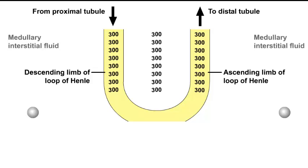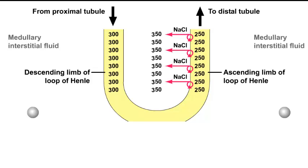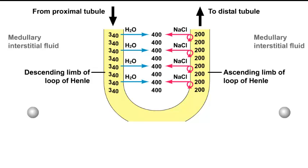Before the gradient is established, the tubular fluid and medullary interstitial fluid are isotonic at 300 MOSM per liter. The active salt pump in the ascending limb transports sodium and chloride from the lumen until the surrounding interstitial fluid is 200 MOSM per liter more concentrated compared to the tubular fluid.